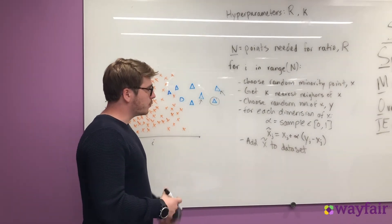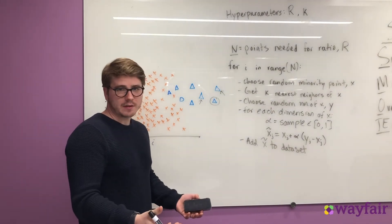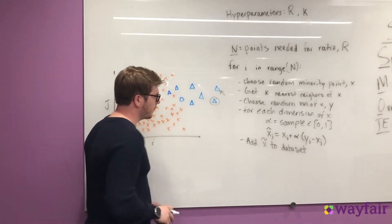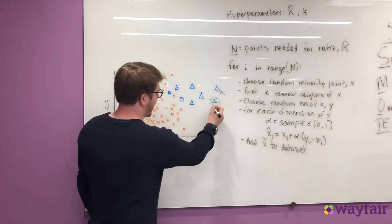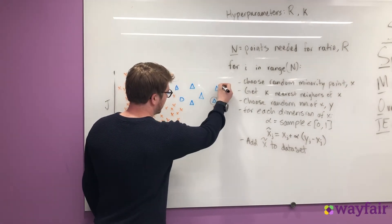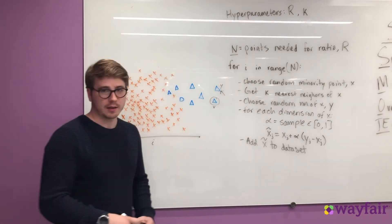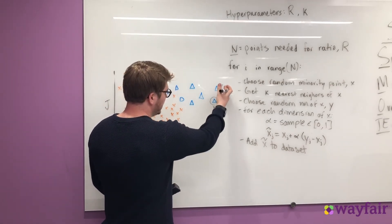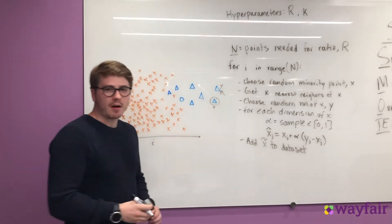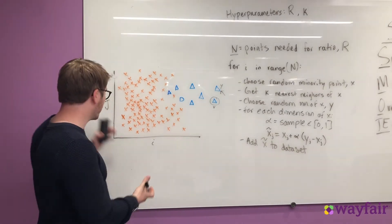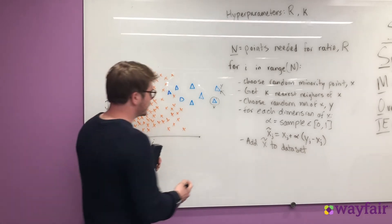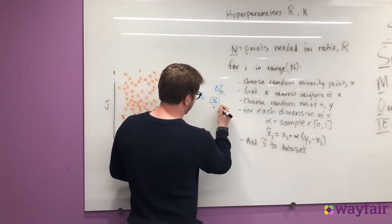So now we're going to randomly choose one of these nearest neighbors. Let's randomly pick this one. And now we have X, this point here, and Y, this point here. Now we want to iterate through each of the dimensions in our data set space. Fortunately here, we just have two dimensions, i and j. So let's look at the dimension i first.